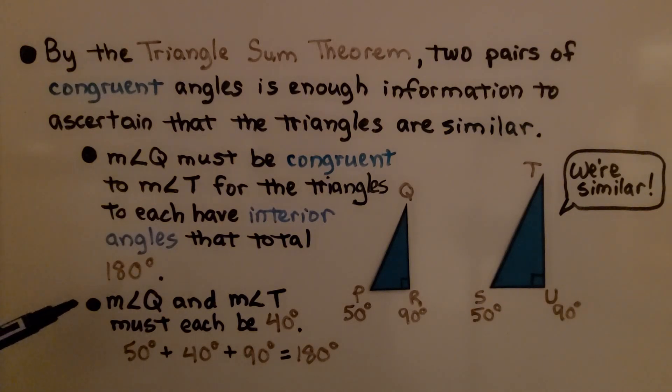The measure of angle Q and the measure of angle T must each be 40 degrees. So we would have 50 degrees plus 40 degrees plus 90 degrees equals 180 degrees. They're similar. They're not the same size, but they're similar.